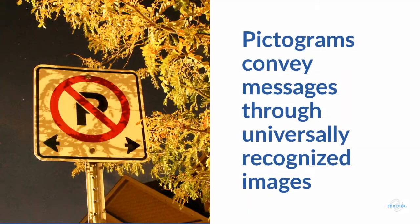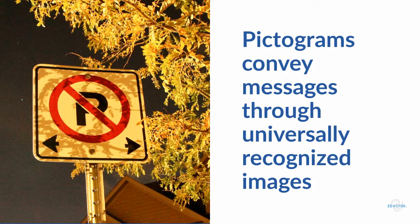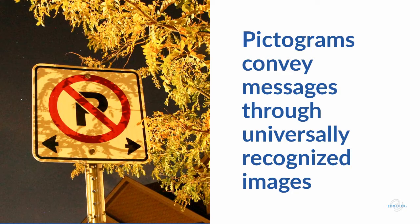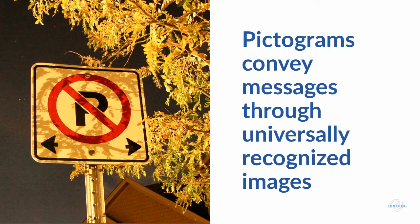One key component of the GHS is pictograms, which are graphics that convey a message through symbols. These universal images eliminate language barriers and make for fast, efficient communication. For example, when we see a red circle with a line through it, we know that means NO.